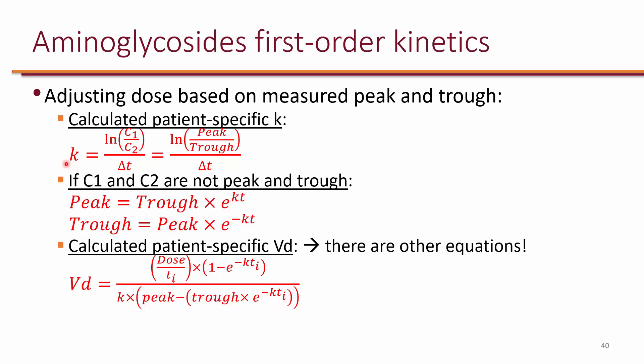And what you do with the K is to get the individualized volume of distribution. The volume of distribution that we calculated previously was an estimate. But this time, since we have a specific K from the patient, we can actually calculate the actual volume of distribution in the patient.